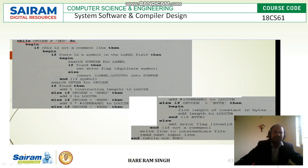Search the operation table for the operation code. If found, then add 3 to the location counter, because the instruction length is 3 bytes. If the opcode is equal to WORD, then add 3 to the location counter. If the opcode is equal to RESW, then we should add 3 times the number of operands to the location counter.